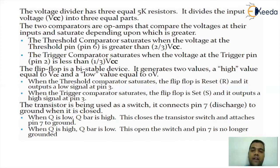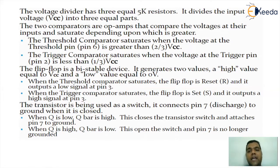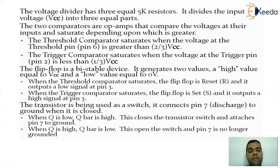When we talk about the lower comparator, when the trigger input goes below 1/3 VCC, the lower comparator gives output 1 — automatically R becomes 1, Q becomes 0, Q-bar becomes 1. If Q becomes 0, the transistor turns OFF and works like an open switch. The opposite logic applies for the upper comparator: whenever the signal tries to cross 2/3 VCC, the upper comparator becomes 1 — S becomes 1, Q becomes 1, Q-bar becomes 0. If Q is 1, the transistor turns ON and works like a closed switch. This is how the internal operation of IC555 comes into picture.